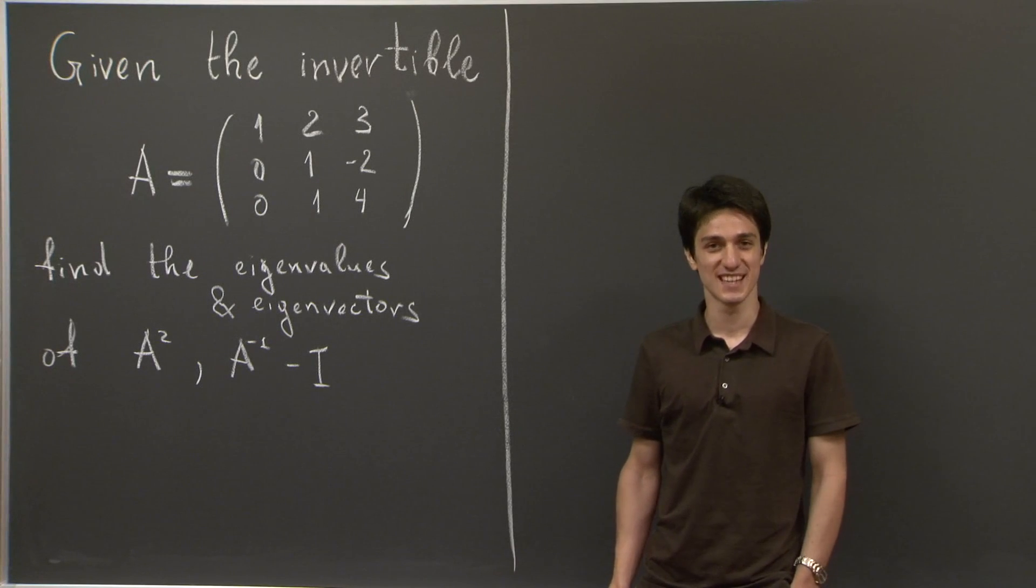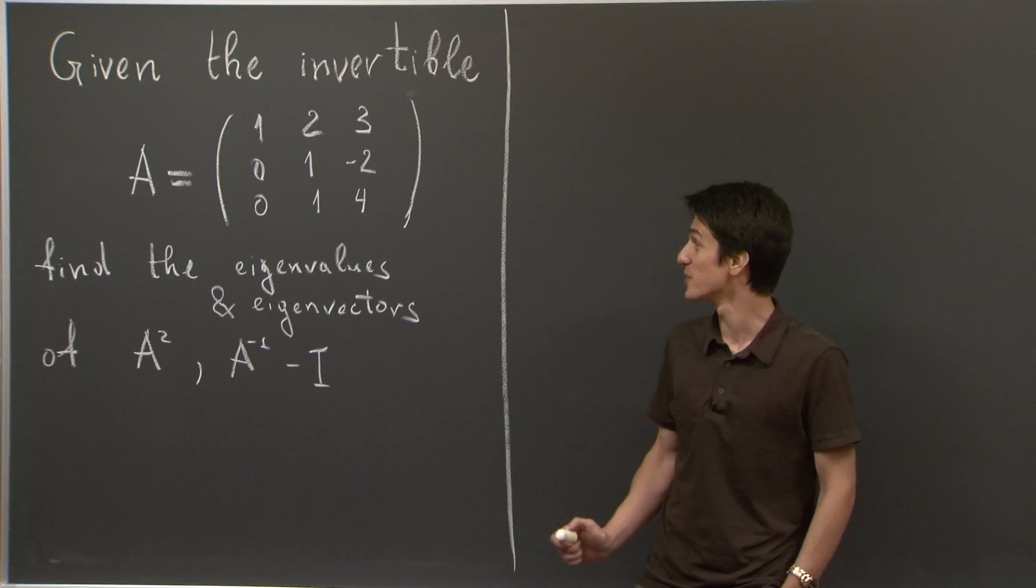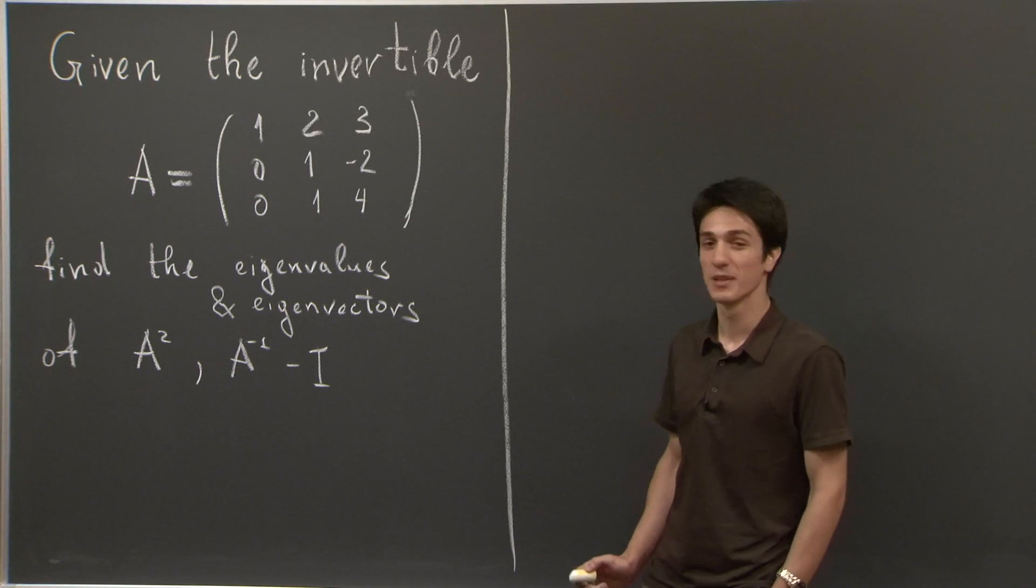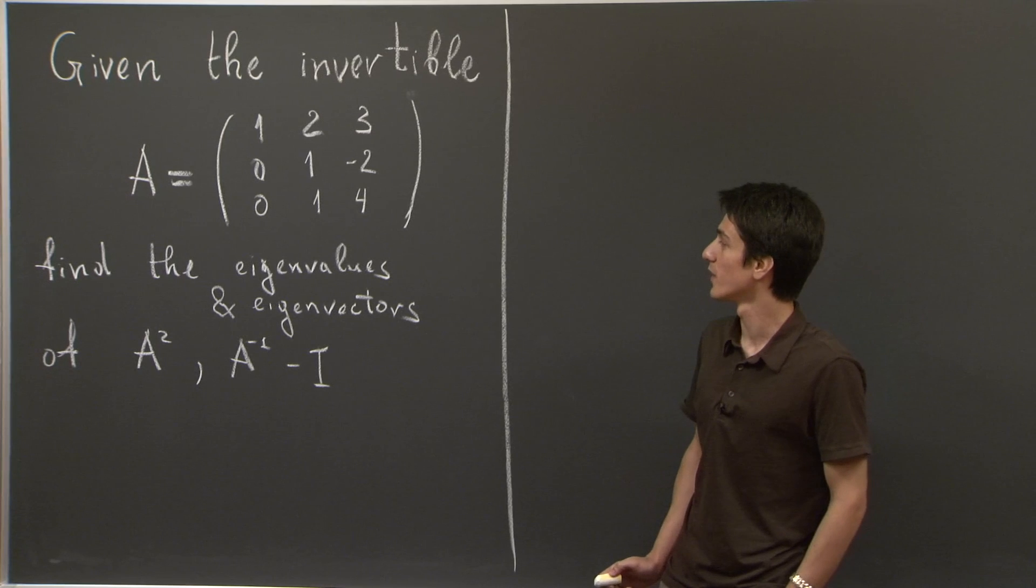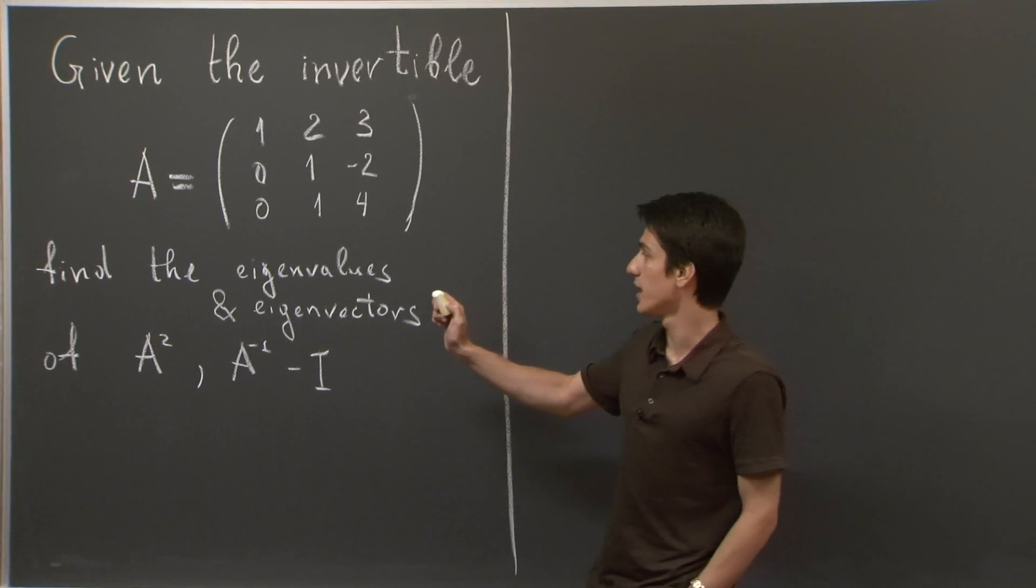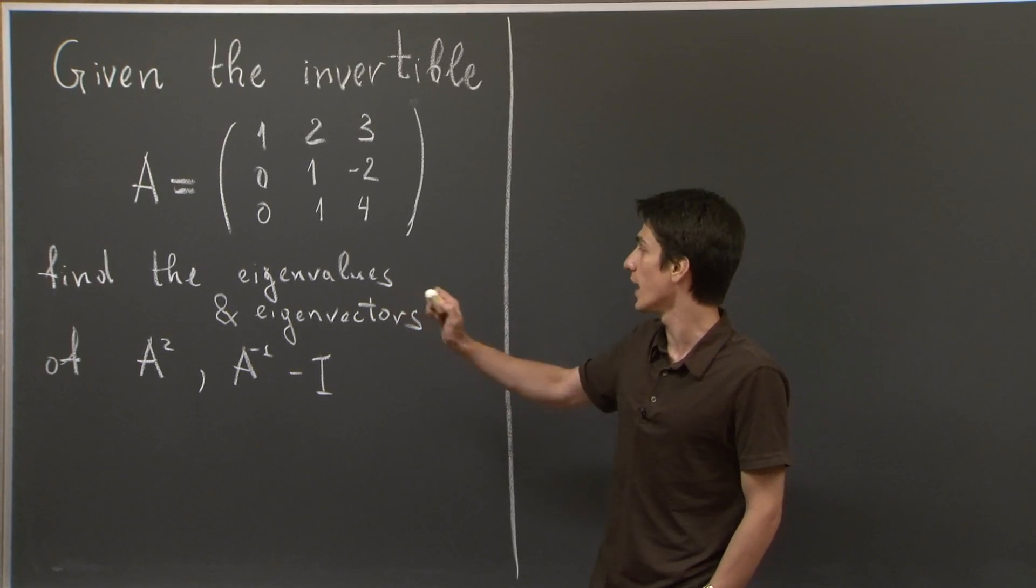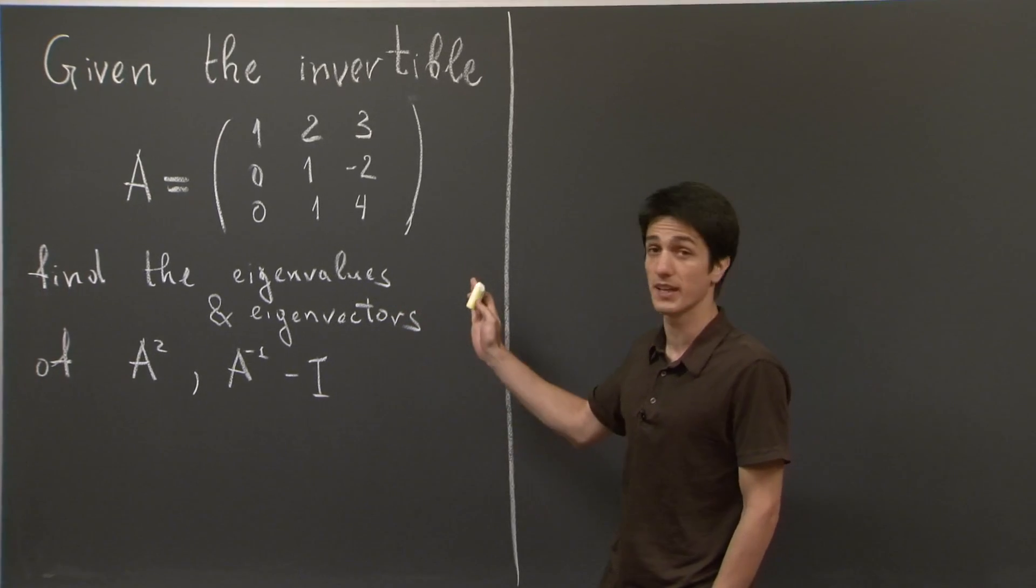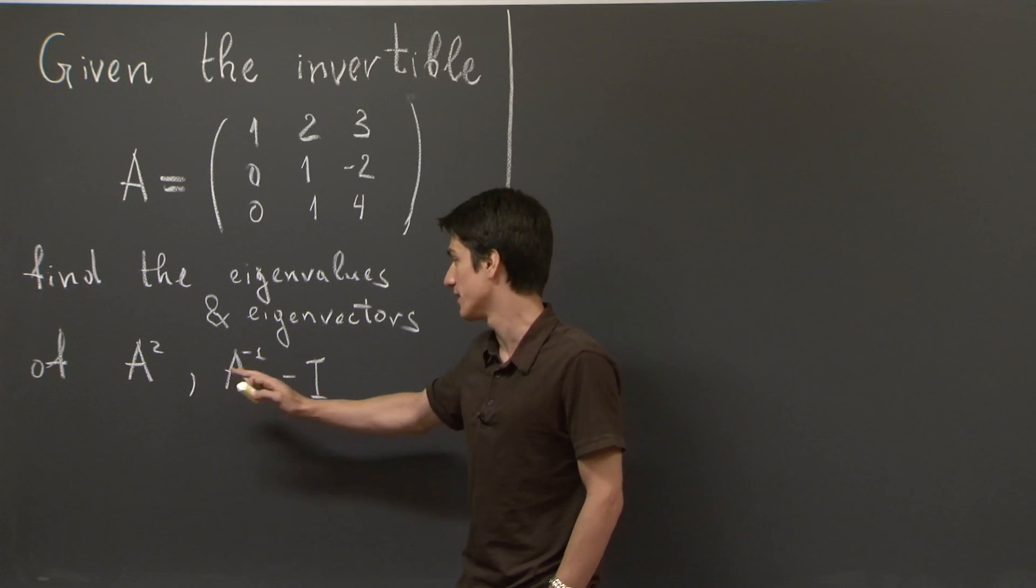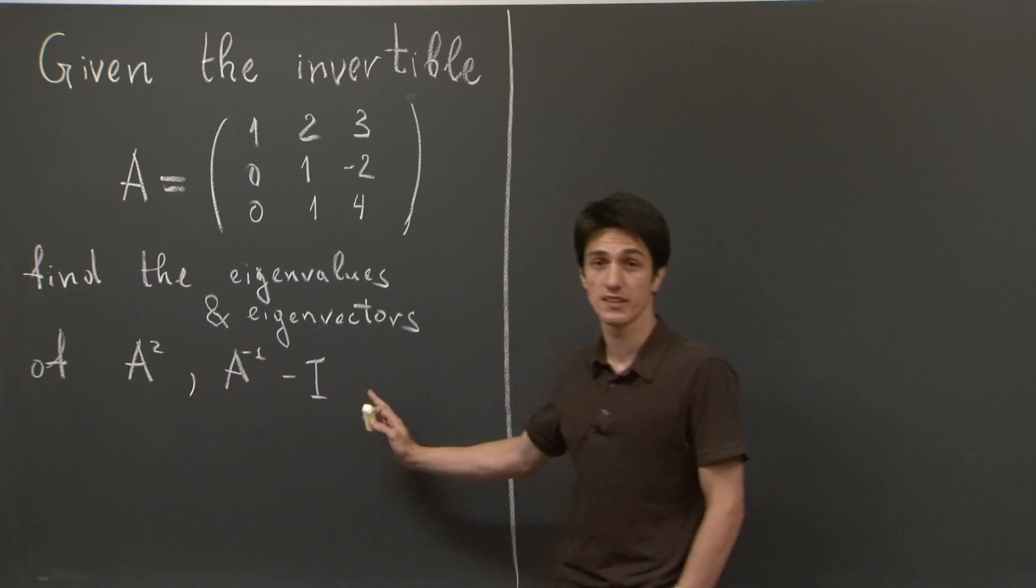Hi, guys. Today, we are going to play around with the basics of eigenvalues and eigenvectors. We're going to do the following problem. We're given this invertible matrix A, and we'll find the eigenvalues and eigenvectors not of A, but of A squared and A inverse minus the identity.